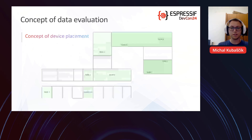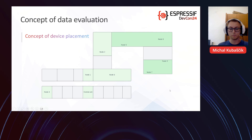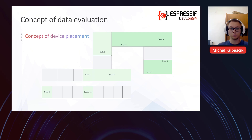Regarding device placement: on the picture we can see a map of the department and the placement of the nodes. The central unit is in one office and the nodes are in the other classrooms and our office. We can predict that signal quality will vary due to multiple walls and the structure between the peers.